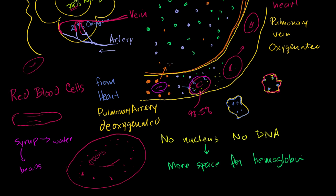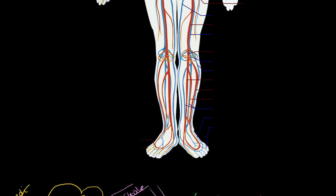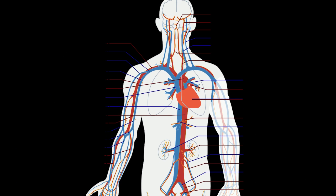I've been all zoomed in here on the alveolus and these pulmonary capillaries. Let's zoom out a lot, just to understand how the blood is flowing and get a better understanding of pulmonary arteries and veins relative to the other arteries and veins in the body. I copied this diagram of the human circulatory system from Wikipedia. Here in the back you can see the lungs, and you can see the heart is sitting right in the middle.